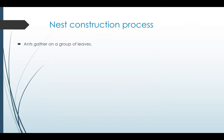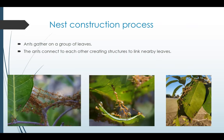The nest construction process is really spectacular and amazing. First, the ants gather on a group of leaves. Next, the ants connect the leaves to each other, creating structures that link the leaves. This structure can be a branching chain, as seen on the left, or a pulling chain like here in the middle, where the ants stand one on top of the other, pulling the leaves closer and closer until the leaves are closed. And eventually, as seen on the right, there is a deeper structure where the ants hold the leaf statically.